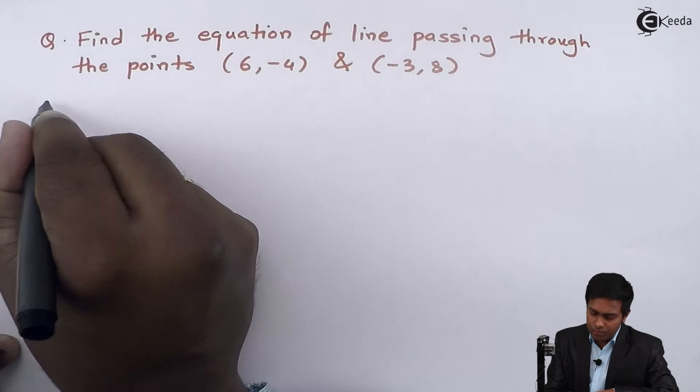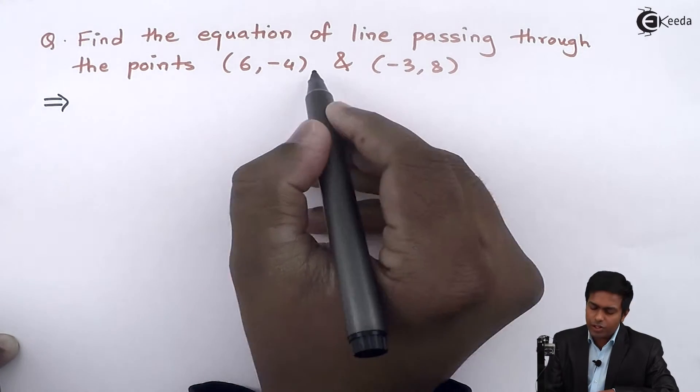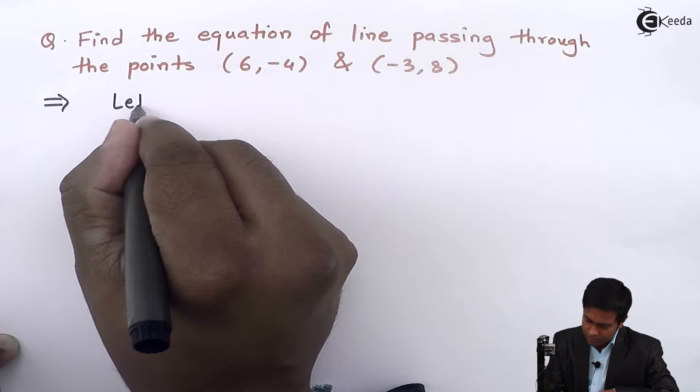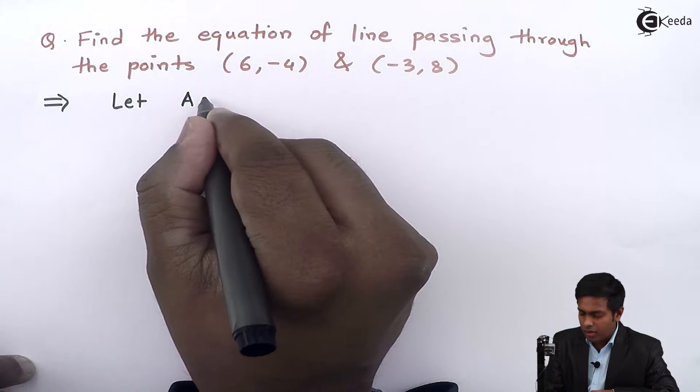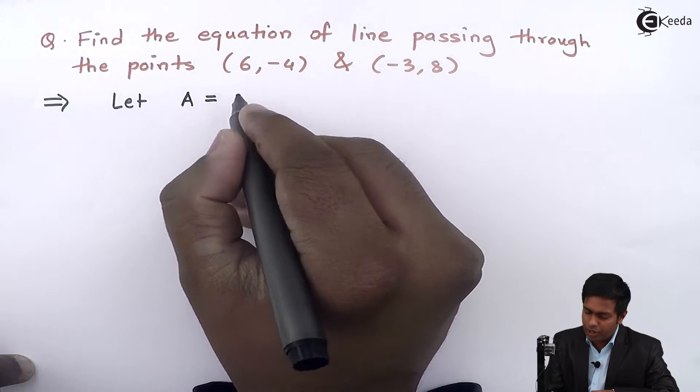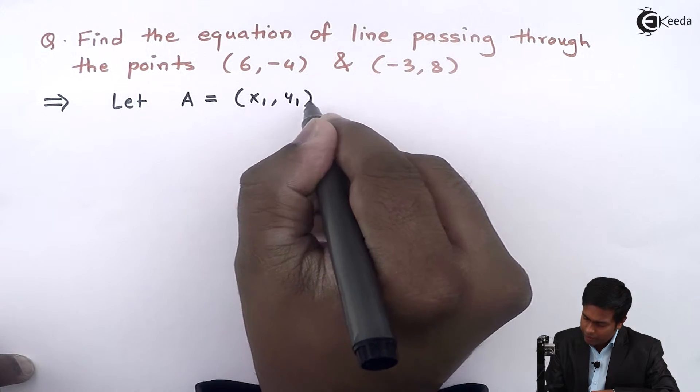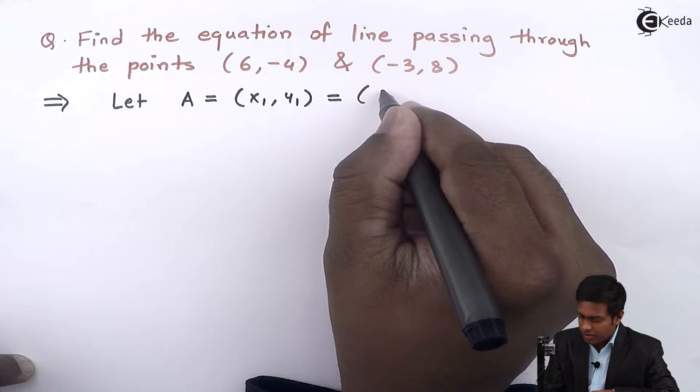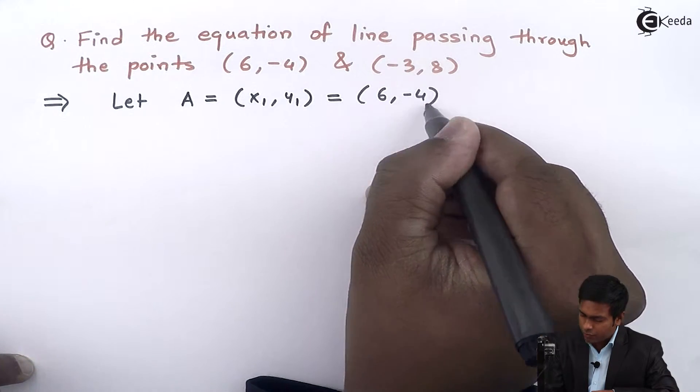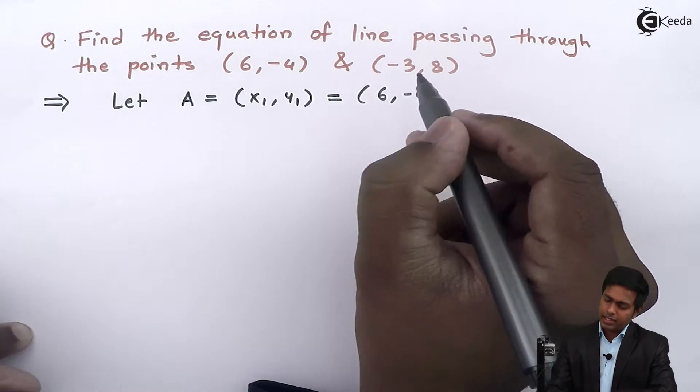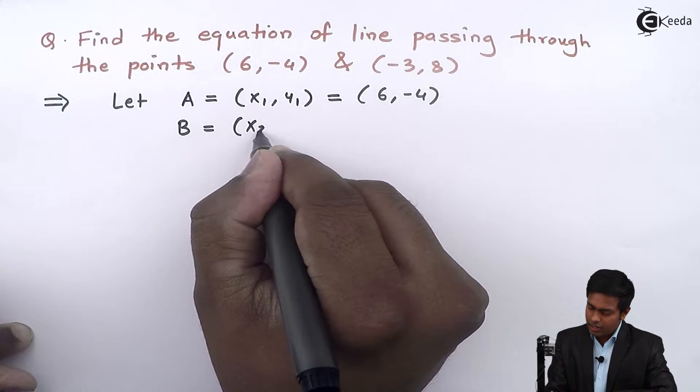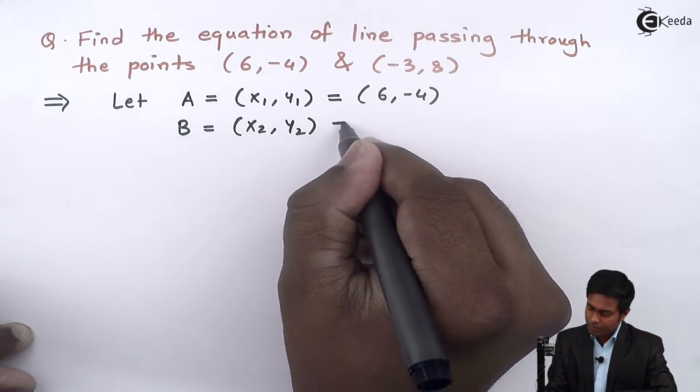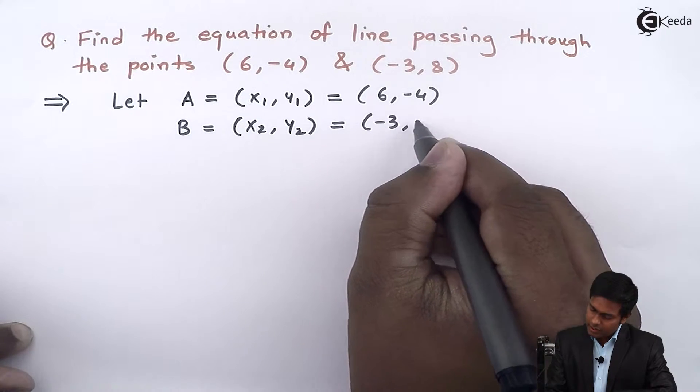Before applying the equation, let's assume the first point as A. The coordinates of point A are (x₁, y₁) = (6, -4). Let's say the second point is B where the coordinates are (x₂, y₂) = (-3, 8).